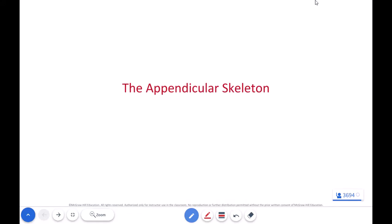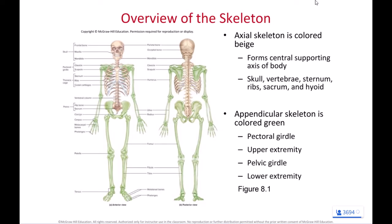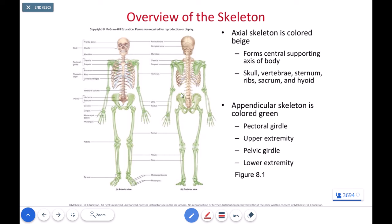As we look at our appendicular skeleton, this is going to be the skeleton associated with the appendages. We have the arms and the legs colored green. The part that's typically tricky for students is what about the bones of the pelvis? What about the bones of the shoulder? Are those axial or are they appendicular? Because they're categorized as part of the trunk. To be clear, the pelvis is part of the appendicular skeleton, and the clavicle and scapula are also part of the appendicular skeleton as well.